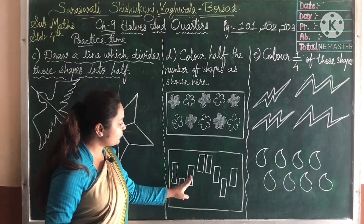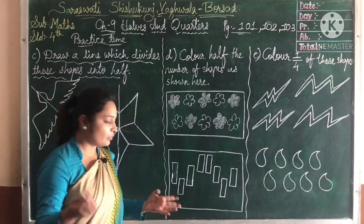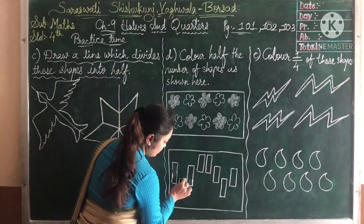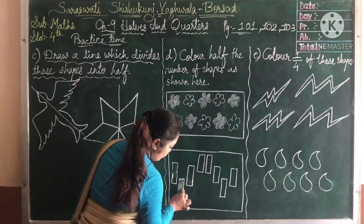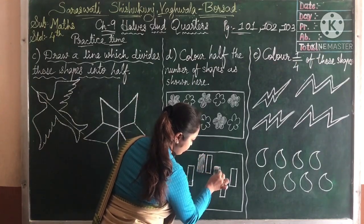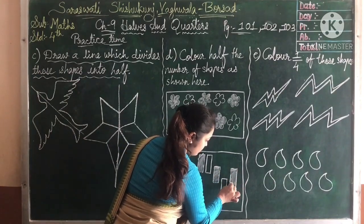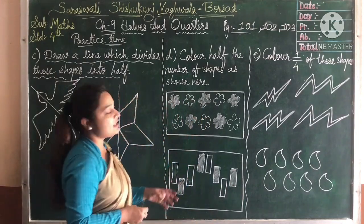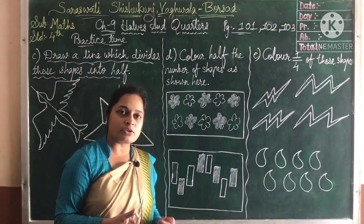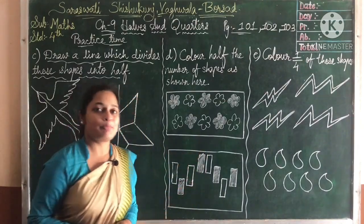Here, total shapes are one, two, three, four, five, six, seven, eight. Half of eight is four. So you need to shade four shapes here: one, two, three and four. Instead of pencil you can use colors also — crayon colors or pencil colors to shade these pictures.